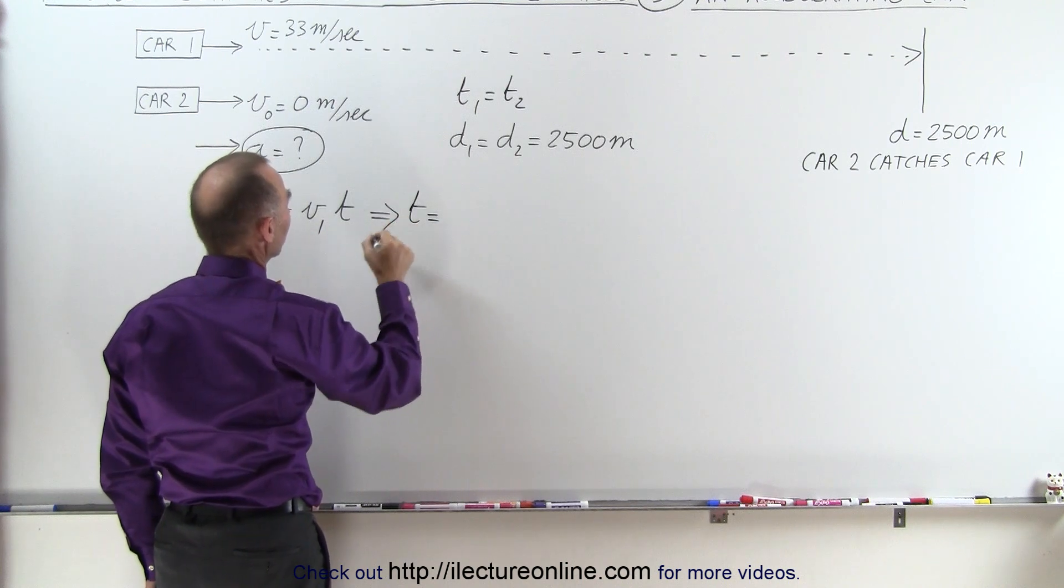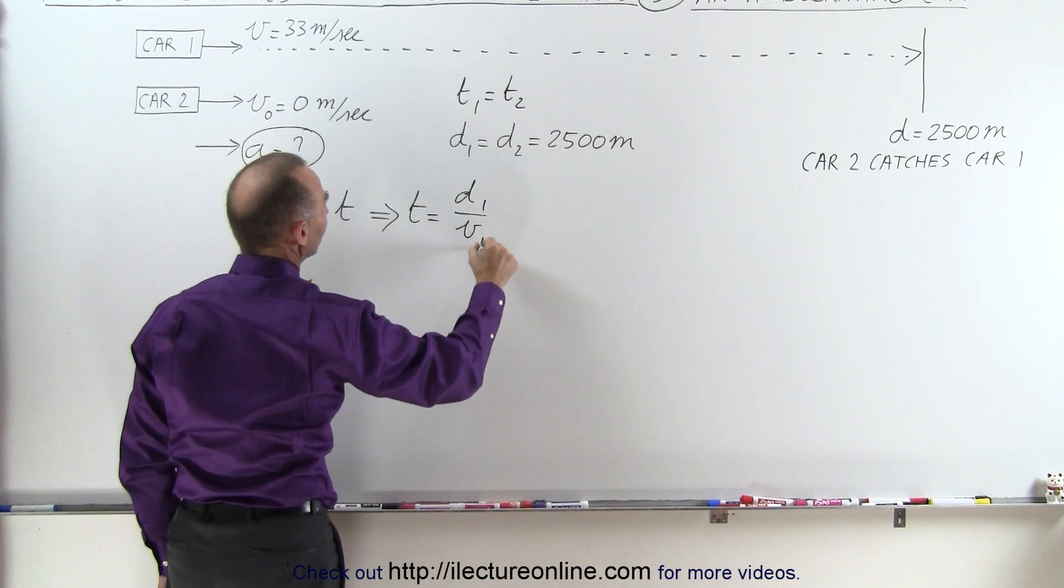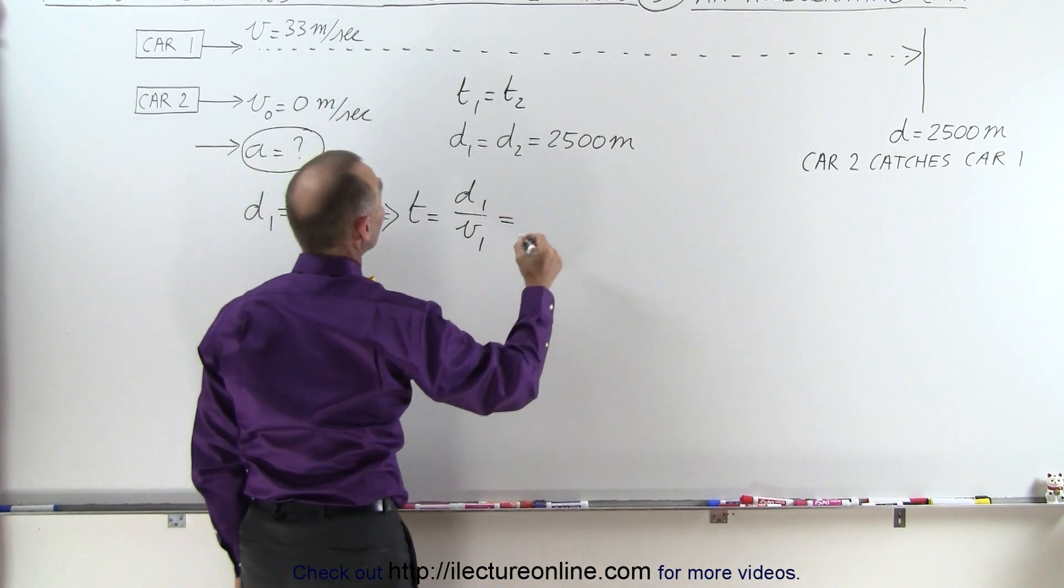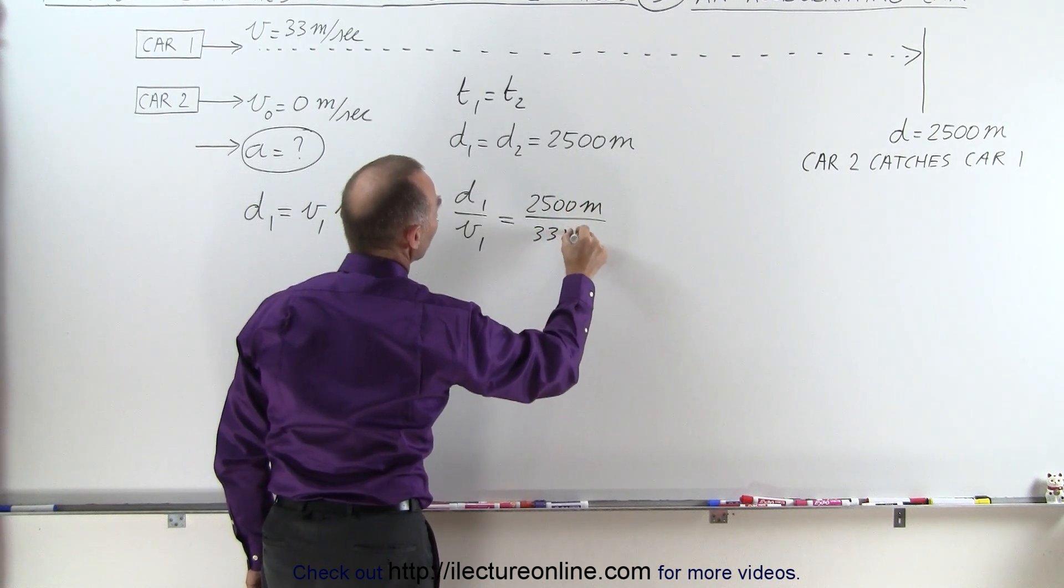The time is going to be equal to distance 1 divided by velocity 1. So distance 1 is going to be 2,500 meters, and velocity 1 is 33 meters per second.